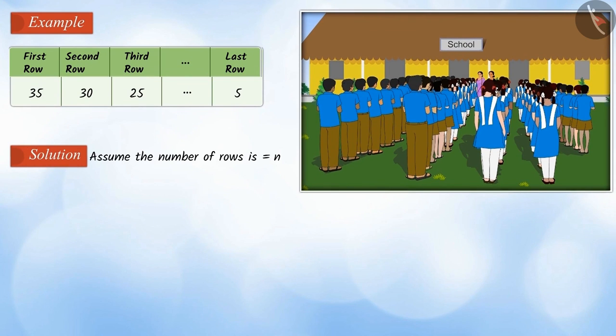Let the number of rows be n. Then, the first row, that is the first term a equals 35. The common difference of the row d equals minus 5. And here, the last term, that is An equals 5.